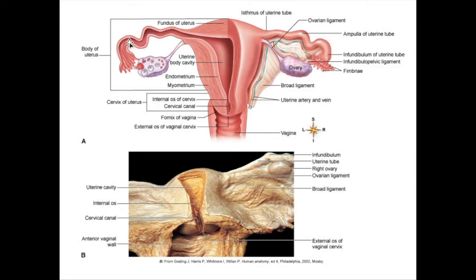Now this over here, as we mentioned in a previous lab, is going to be considered the uterine tube, also called the fallopian tube. The ovaries are going to be producing an egg about once per month — one haploid ovum per month. It is going to be released basically into the interstitium, and then you have fingers called fimbriae. Fimbriae are going to basically sweep that ovum into the ampulla of the uterine tube.